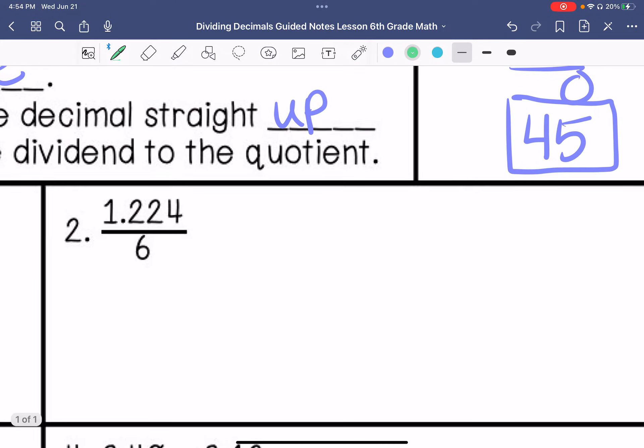Number 2. A division problem can be written like this. We have 6 is the divisor. The dividend is 1.224. The divisor is not a decimal, so I'm not going to convert it to a whole number. It already is a whole number. I'm going to bring that decimal straight up. 6 cannot go into 1. It goes into 12 two times. It cannot go into 2. It goes into 24 four times. So my answer is 0.204.